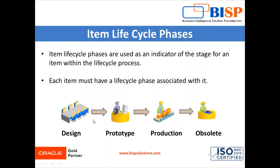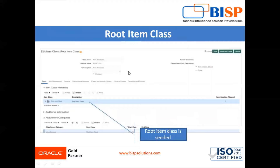If your business needs item lifecycle phases, you can create lifecycle phases and associate them to the item classes. Item lifecycle phases are used as an indicator of the stage for an item within the lifecycle process. For example, for a water bottle: first the item is in the design phase, then it goes to the prototype or pre-production phase, then to the production phase, and after completing production the item goes to the obsolete phase. That is all about item lifecycle phases.